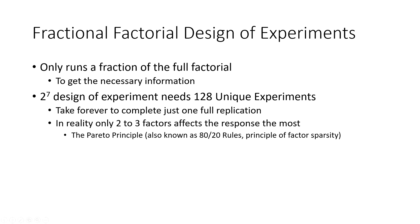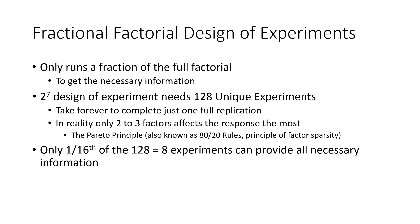Before we do that, we can simply screen the important variables. For this example, we can run only 1/16th of those 128 experiments, which is only eight experiments, and it can provide all necessary information for the seven variables because eight experiments has seven degrees of freedom.